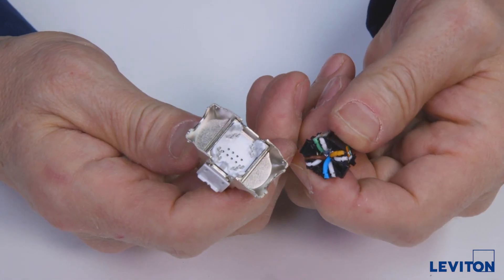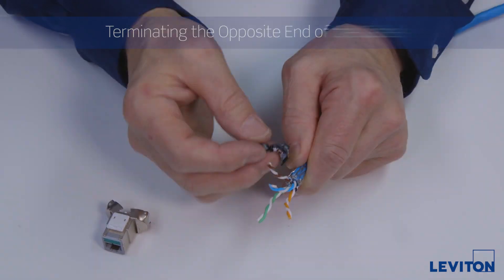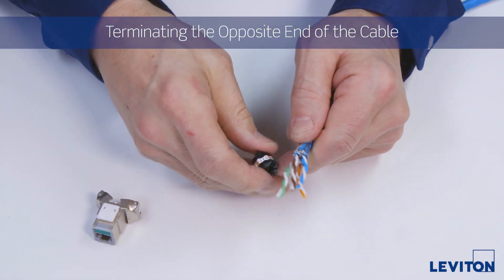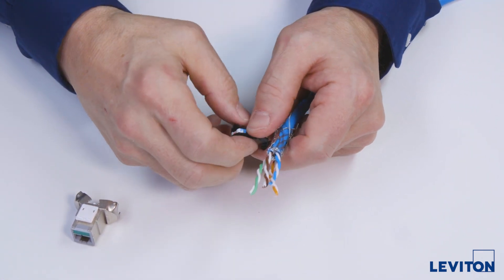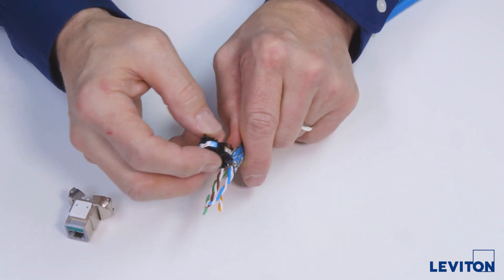The connector is ready for re-termination. When terminating the other end of the cable, the pairs lay out in a different order, so a pair crossover is required.